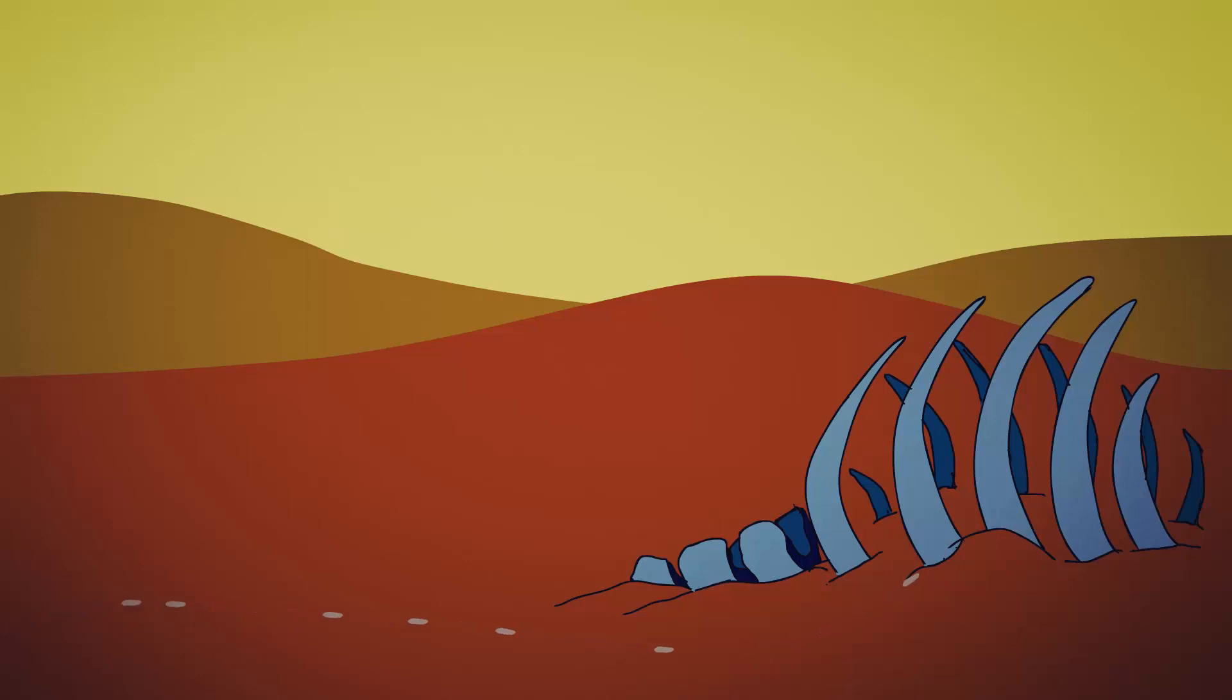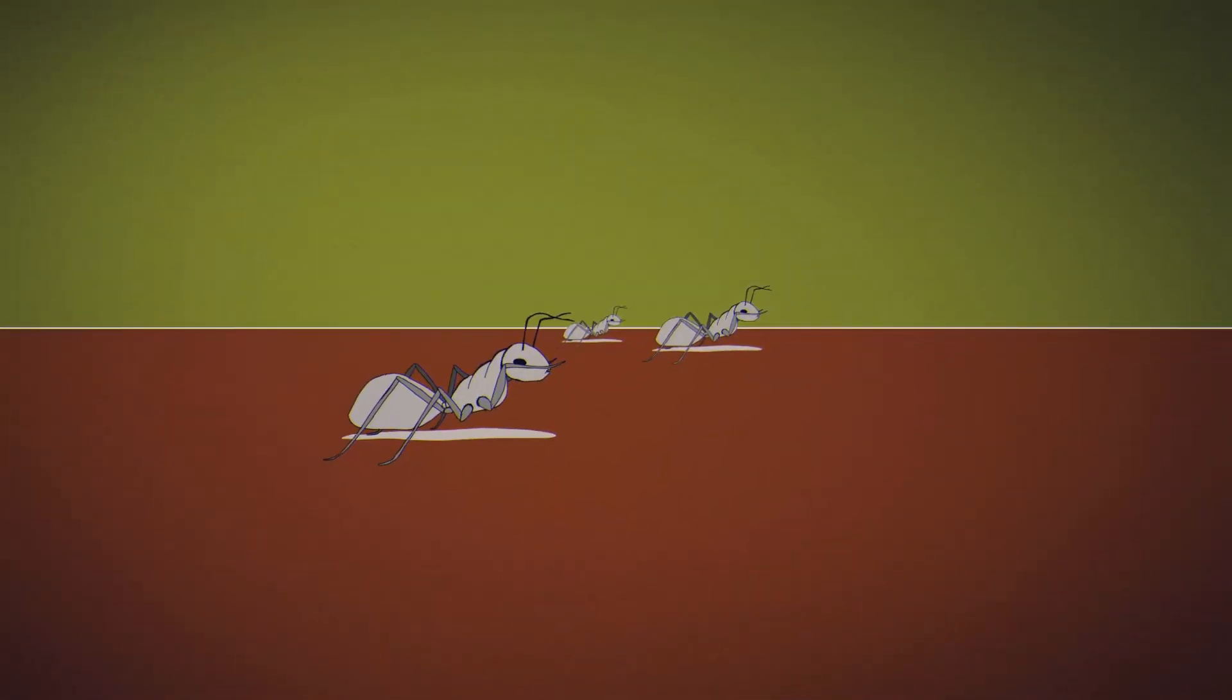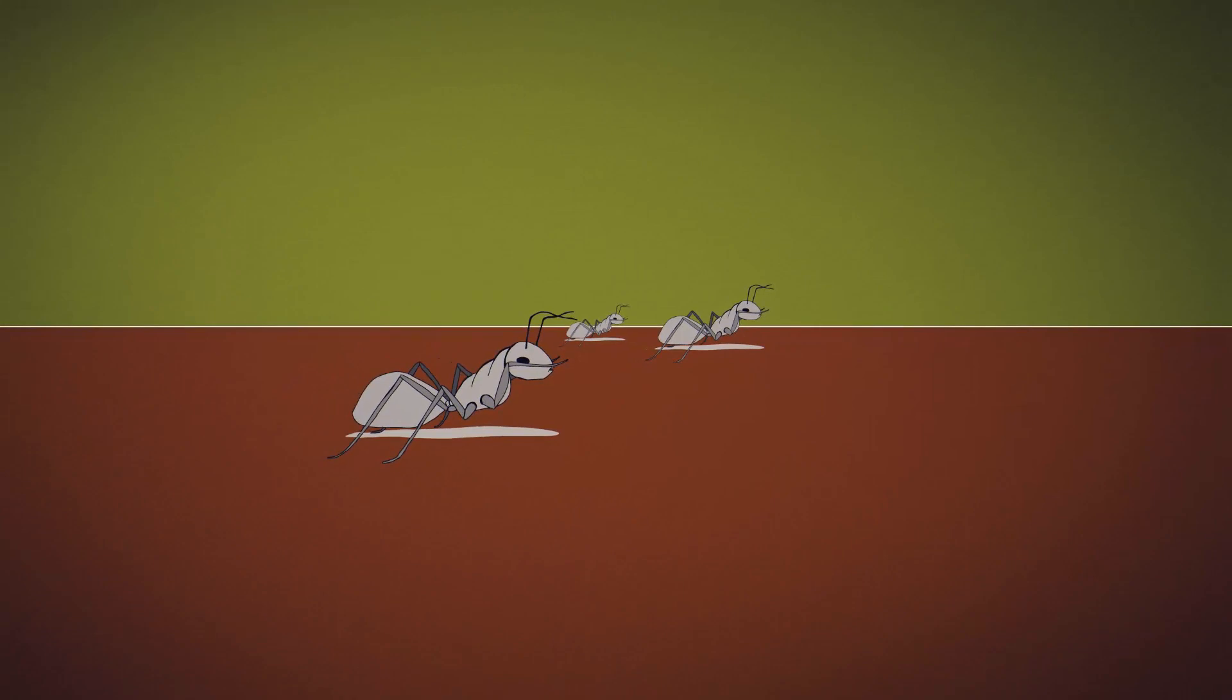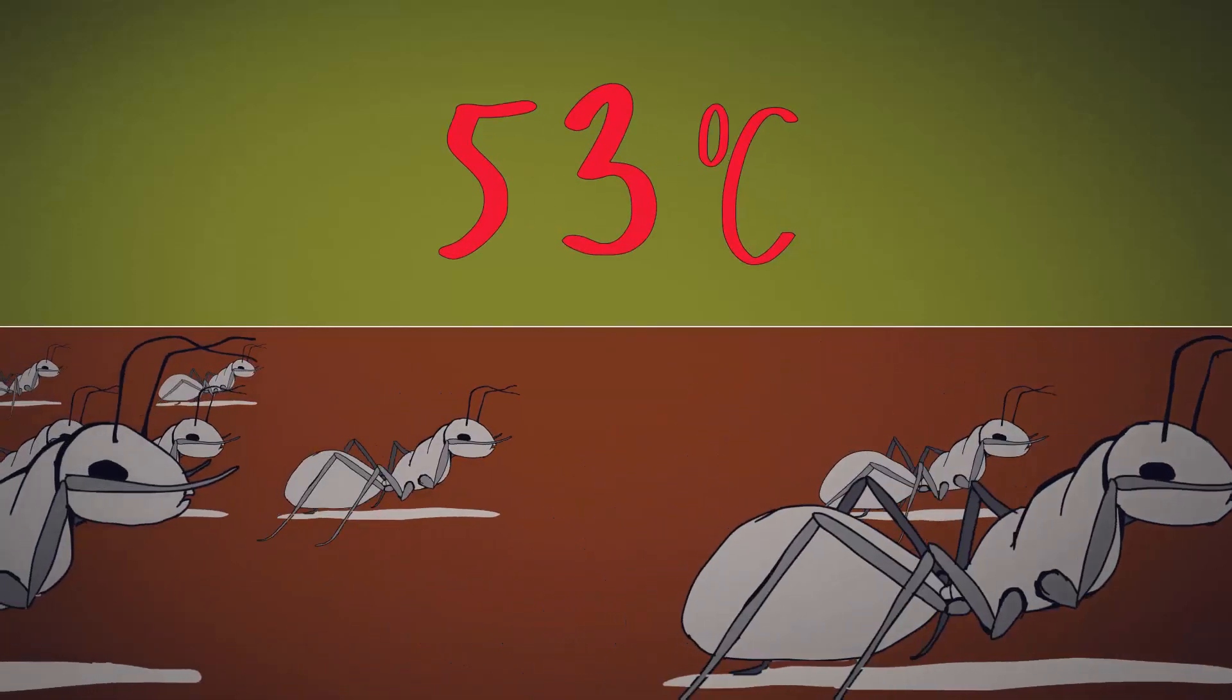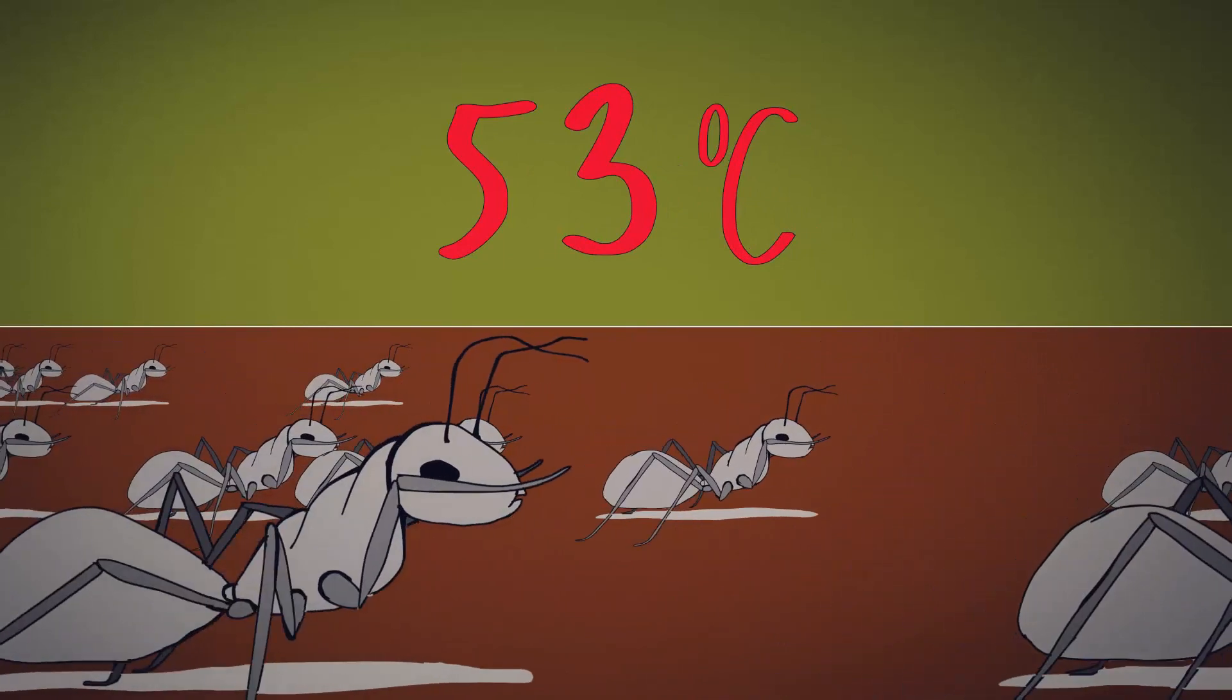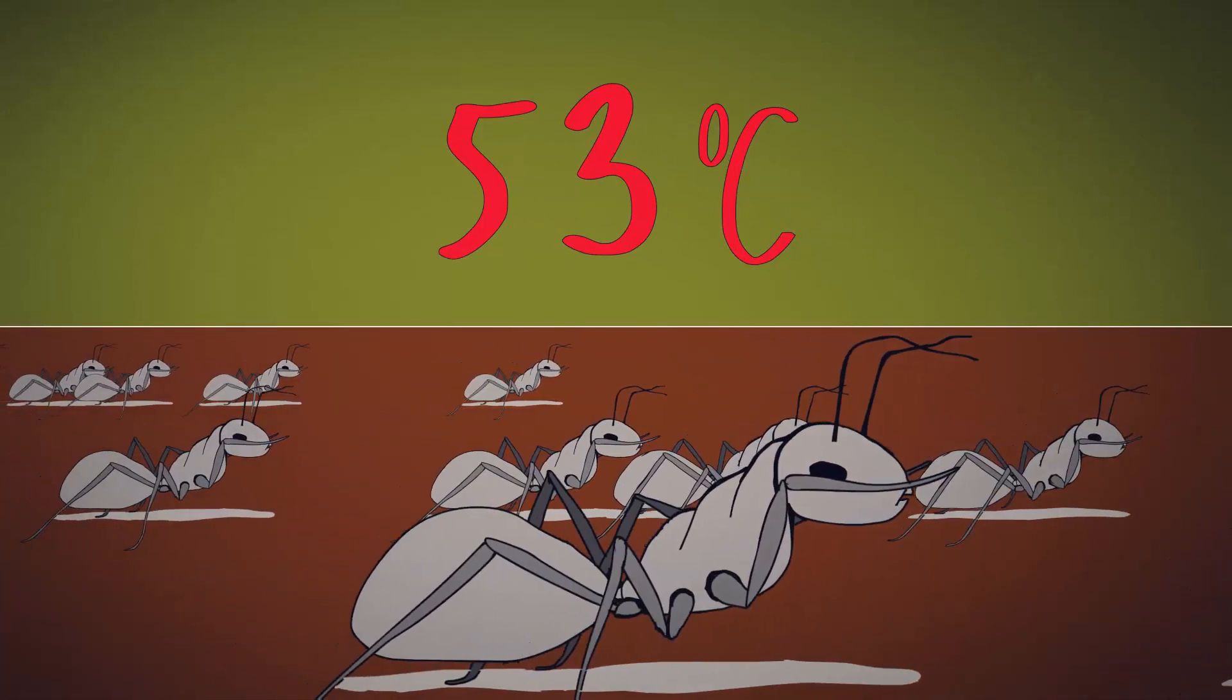To cope with such high temperatures, the ants have several unique adaptations. A few scouts keep watch and alert the colony when ant-eating lizards take shelter in their burrows. Then, the whole colony, hundreds of ants, leaves to search for food, although they need to complete their work before the temperature reaches 53 degrees Celsius, 127 degrees Fahrenheit, a temperature capable of killing them.